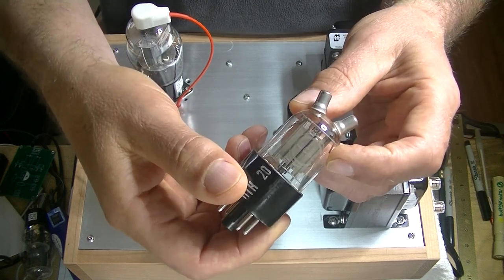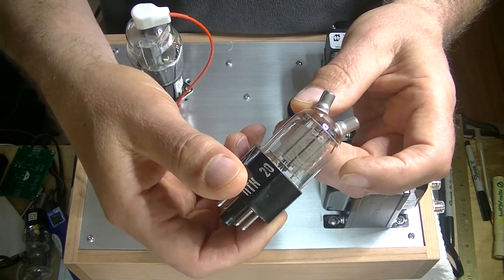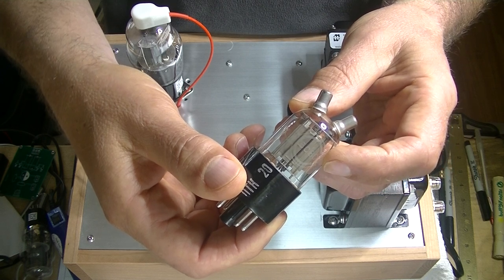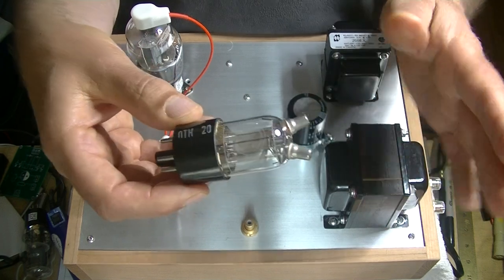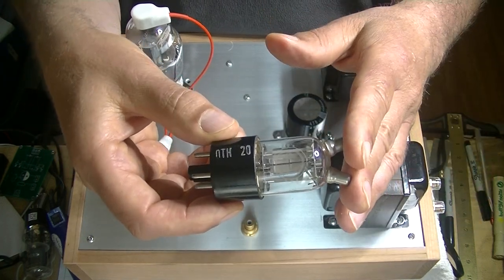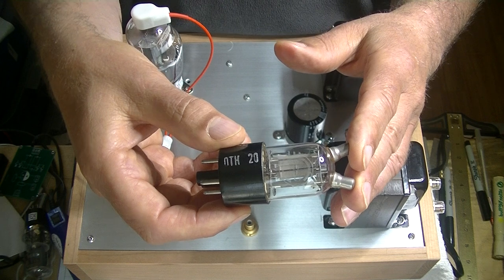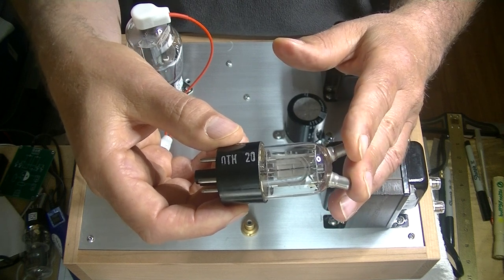And look at that beautiful logo. That's the Svetlana logo, the Flying C or Winged C logo. And actually, when I fired this up for its very first listening test, this was the tube that was in the driver's spot, and the amp just sounded glorious. Let's look at the power tube.